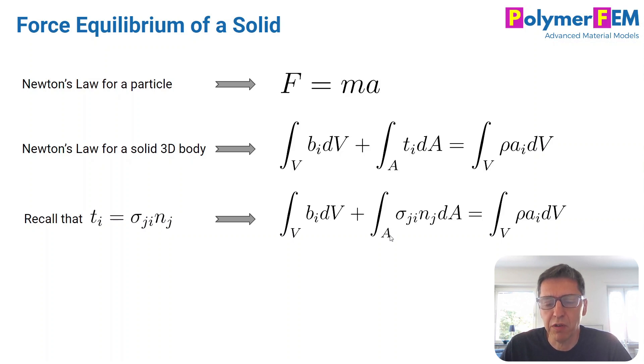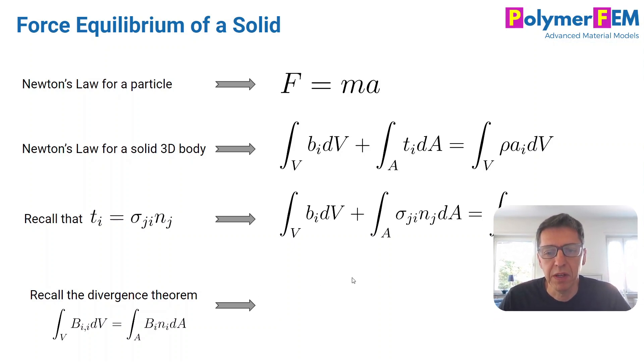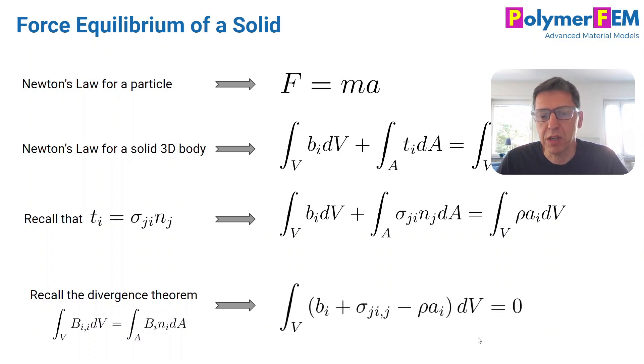This is now suitable to be simplified by going from an area to a volume using the divergence theorem. The divergence theorem comes up many times in theoretical solid mechanics and other fields. One way to write it is shown here—it shows you how you can go from an area integral of the surface of a body to a volume integral over the interior. If we plug that in, we'll end up with this equation. The beauty here is we're going from volume and area integrals to just a volume integral. This equation is very useful in many cases.